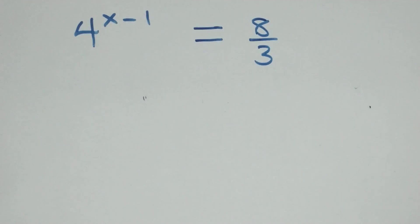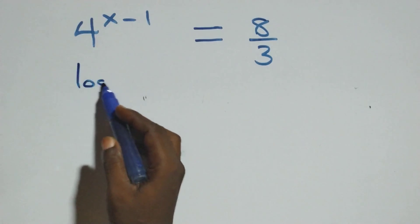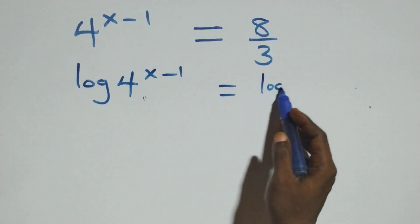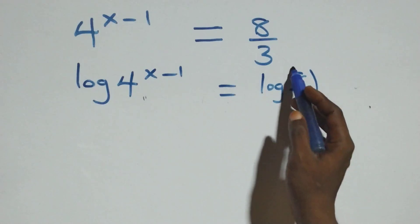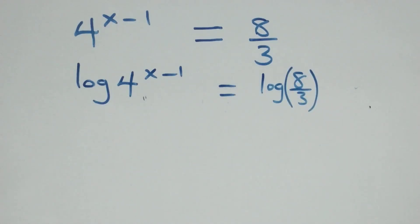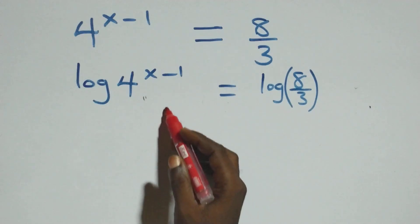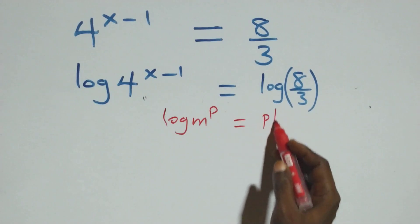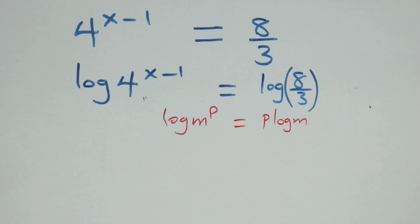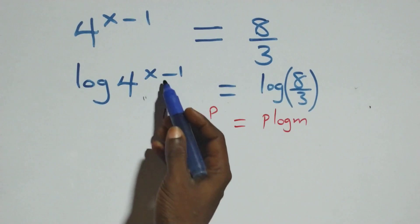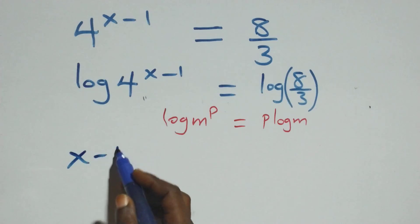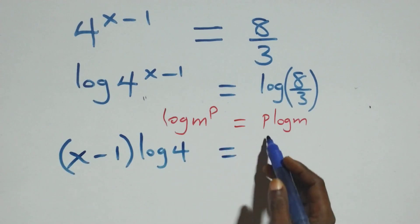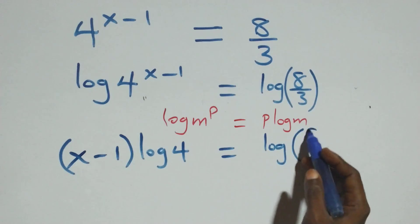We take the log of both sides: log(4^(x-1)) equals log(8/3). We apply the power law of logarithms — log(m^p) equals p·log(m) — so (x-1)·log 4 equals log(8/3).